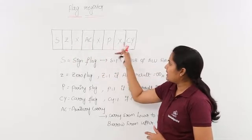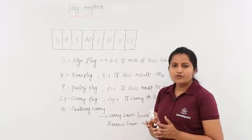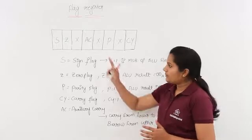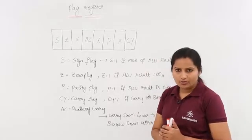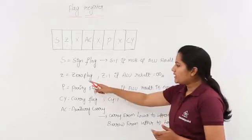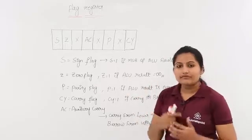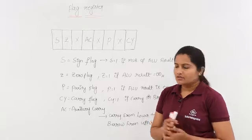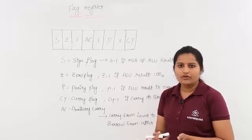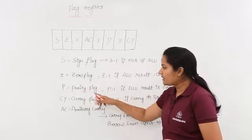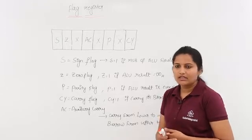S, Z, AC, P, and CY are the used bits in this flag register. That means out of 8 bits, only 5 bits are used. S means sign flag — when S is equal to 1, it means if the MSB of the ALU result is equal to 1, then only your sign flag is equivalent to 1. Coming to the zero flag: when Z is equal to 1, it means if the ALU result shows 00H, then only your zero flag will be activated.